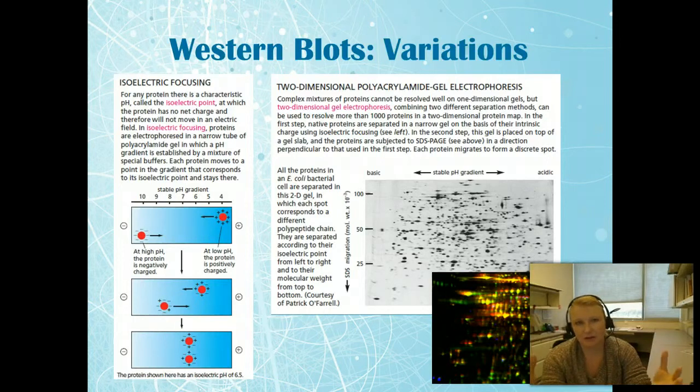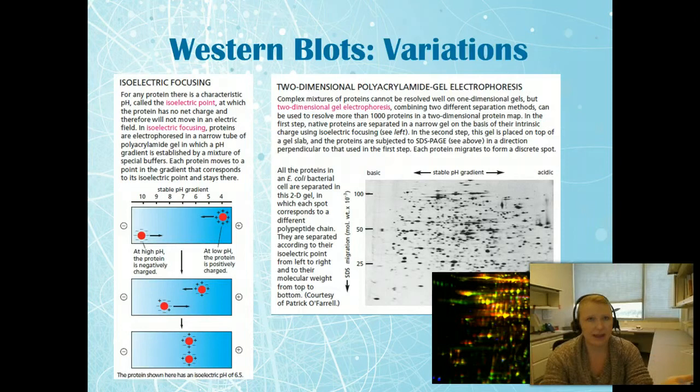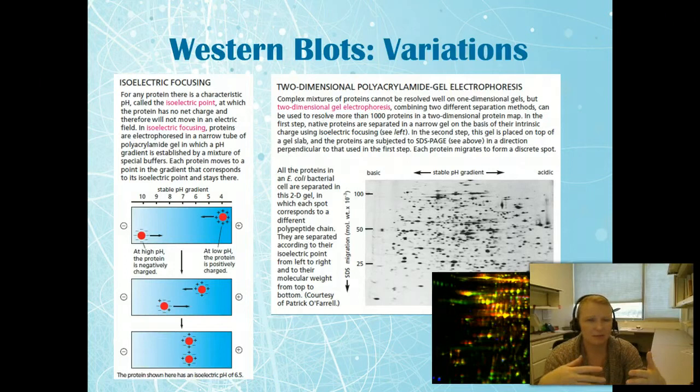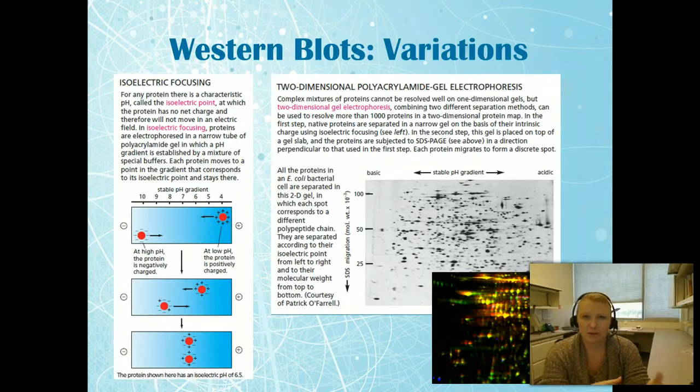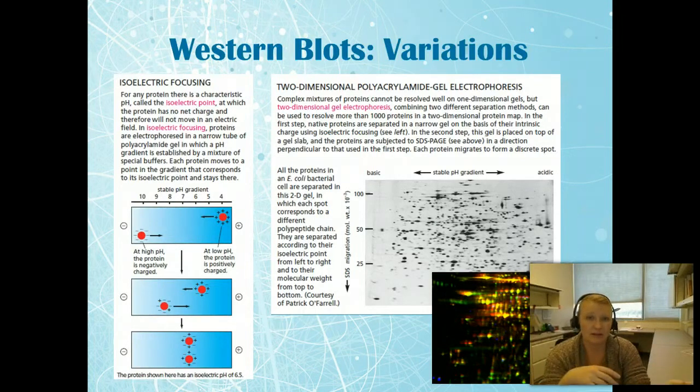In traditional western blot, if I have three proteins that are all 42 kilodaltons, I can't tell if they're all there except for maybe with the antibody bands. But there is always maybe some cross reactivity, whereas with this I'm going to get a lot more specific protein visualization.